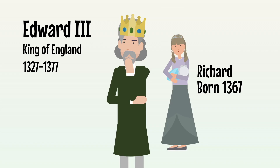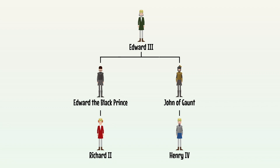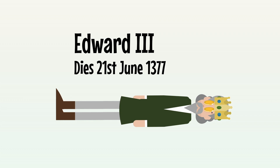When he was born in 1367, his grandfather Edward III had been on the throne for about 40 years. He was the son of the King's eldest, Edward the Black Prince, who would have ruled England as Edward IV had he not died in 1376. As a consequence, when Edward III's 50-year reign finally ended, his grandson was crowned. Before the old King died, he perhaps detected that trouble was brewing.